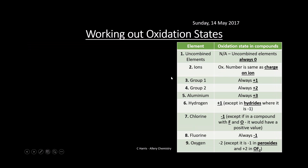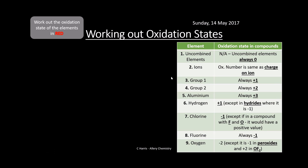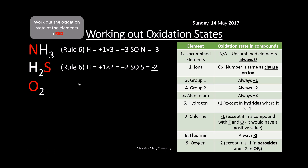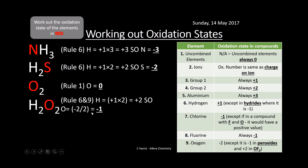Let's use these rules to work out some oxidation states. In NH₃, hydrogen is plus one; we've got three of them so nitrogen must be minus three to balance. In H₂S, hydrogen is plus one and we've got two of them giving plus two, so sulfur must be minus two. O₂ is an uncombined element so it's always zero. In H₂O₂, oxygen is in a peroxide so it's minus one - that's the exception rule.